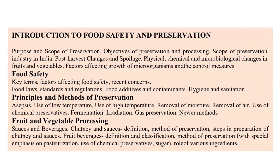Related to fruit and vegetable processing, questions can be asked about different food products — they may give you the description of a chutney or sauce and ask you to identify that food. You also need to know the classification of preservatives: Class 1 and Class 2 preservatives, and which are allowed or not allowed in India.